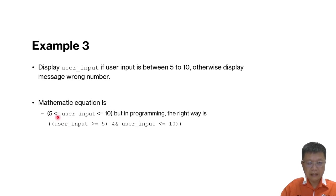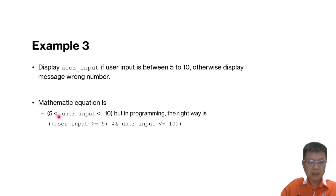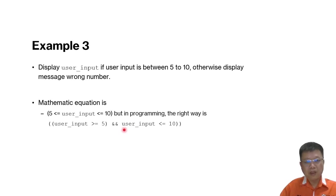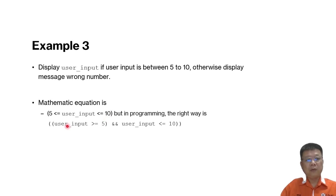In programming we cannot write the condition like that — it doesn't work. We have to separate it into two parts: the first part is user_input >= 5, and the second part is user_input <= 10. Then we combine them using double ampersand (&&). There is also an issue with missing brackets in the expression.